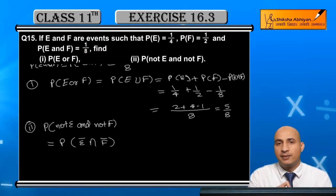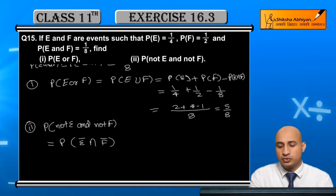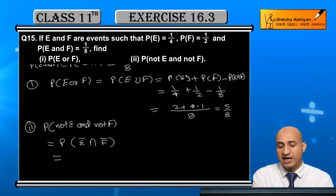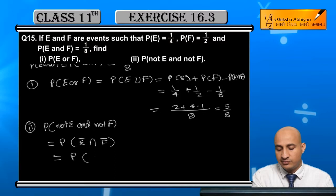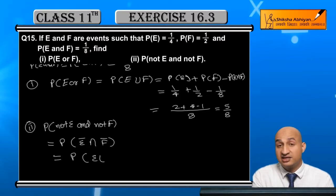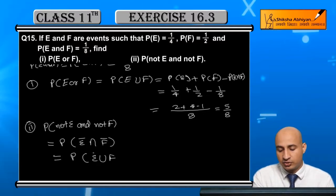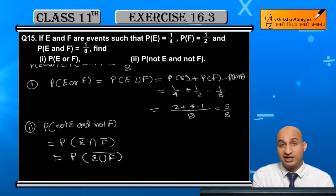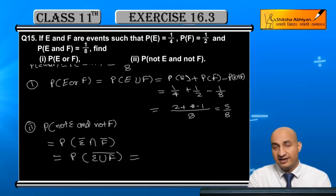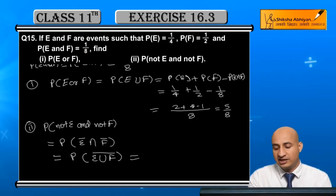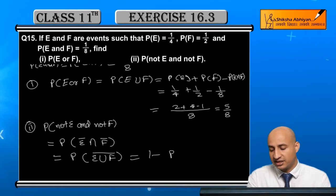Here I will use De Morgan's law — if we put a bar on the combined expression, the intersection changes to union. So P(Ē intersection F̄) = P(complement of E union F), which equals 1 - P(E union F). This is the complete complementary event formula.